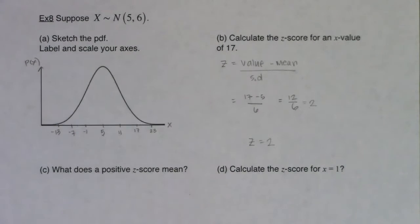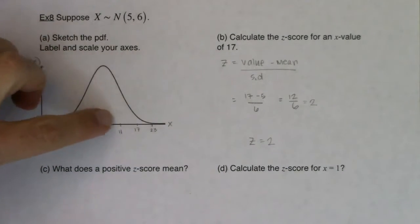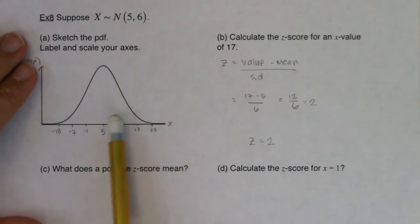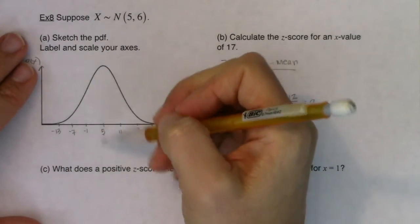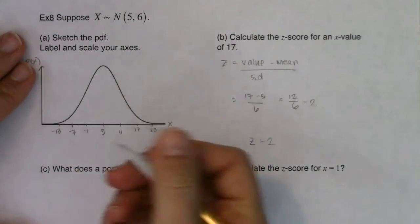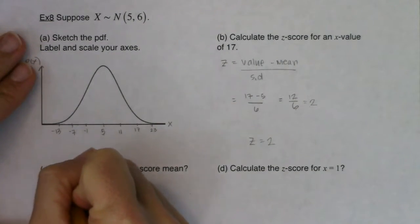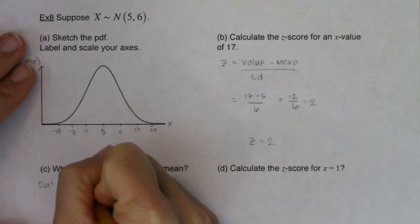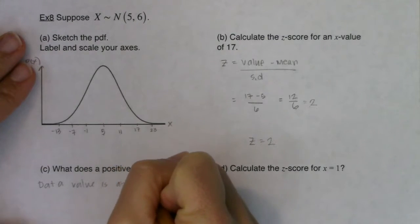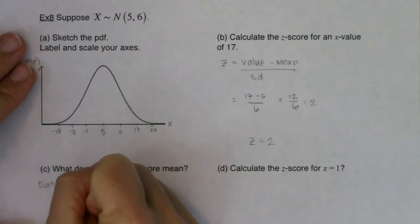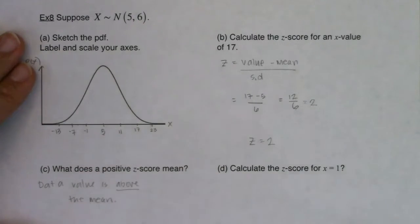When I ask you what does it mean to have a positive z-score? Well, you get positive z-scores for every data value that's above the mean. So any data value above the mean will have a positive z-score. Any data value below the mean will have a negative z-score. And the data value of the mean is always zero. So what does a positive z-score mean? Data value is above the mean.